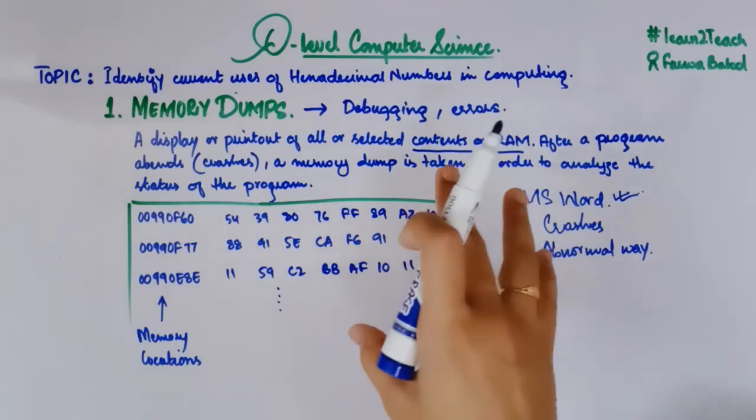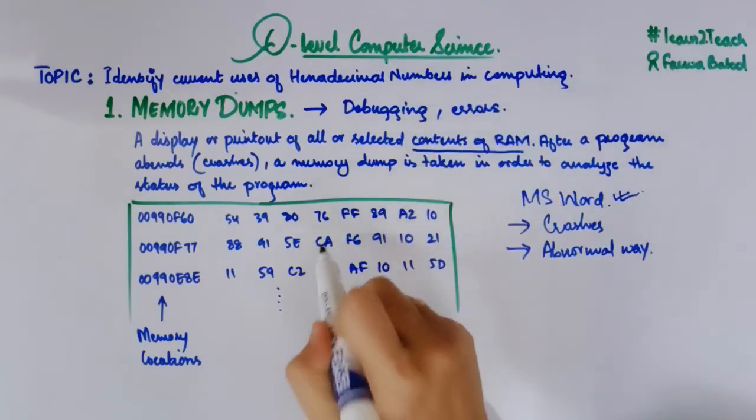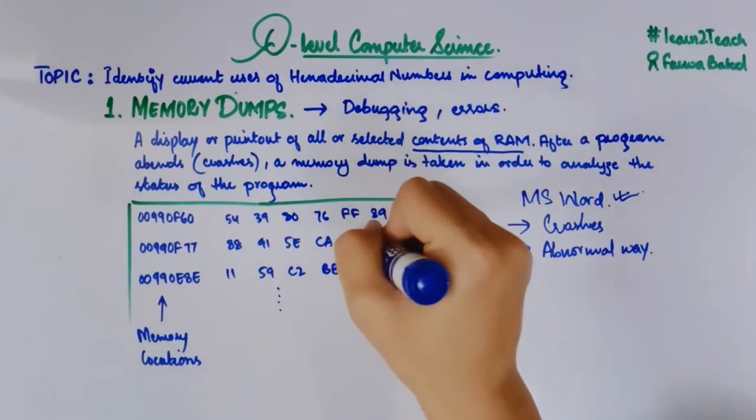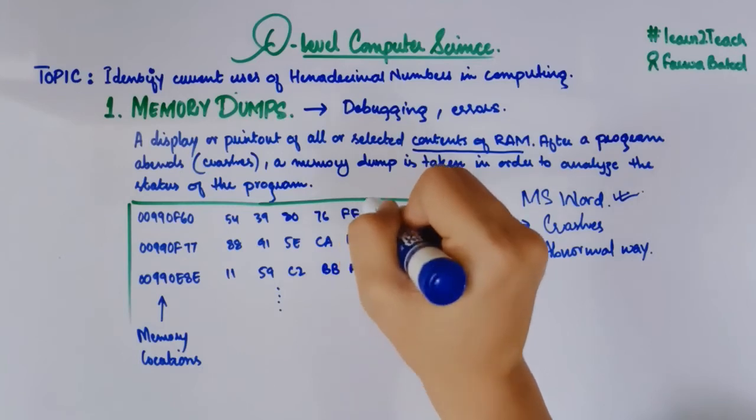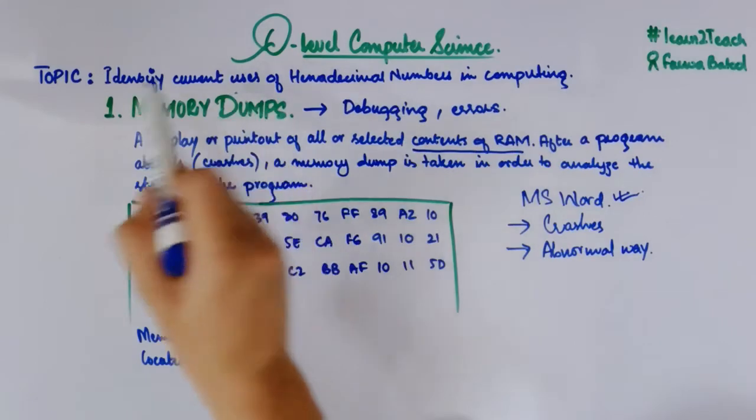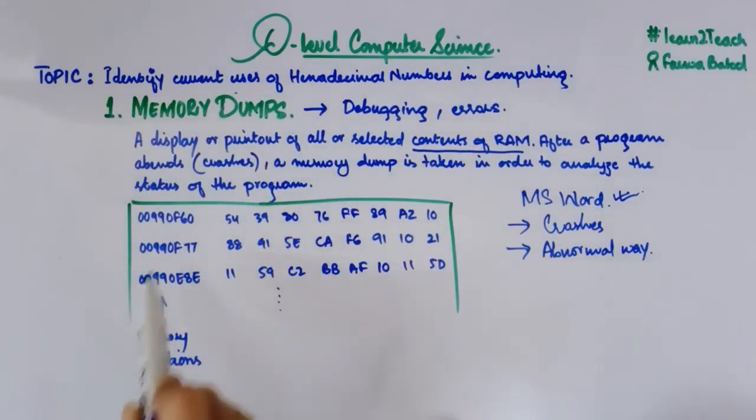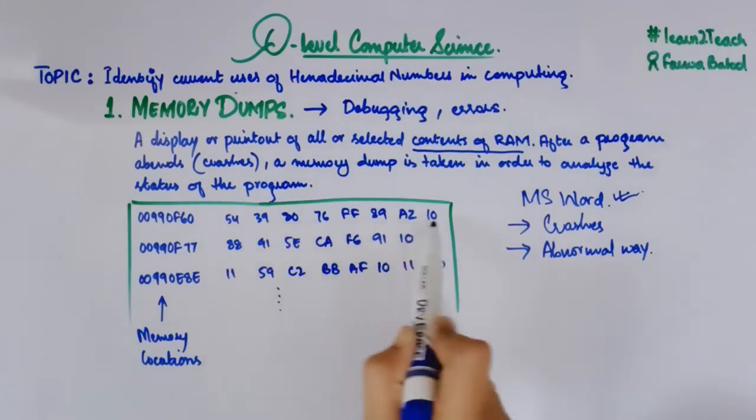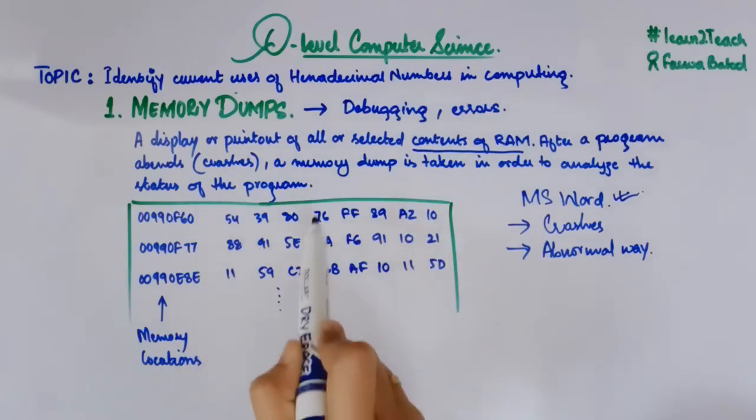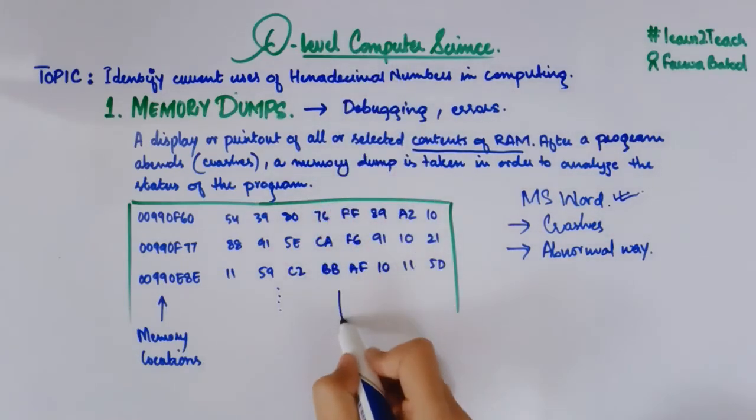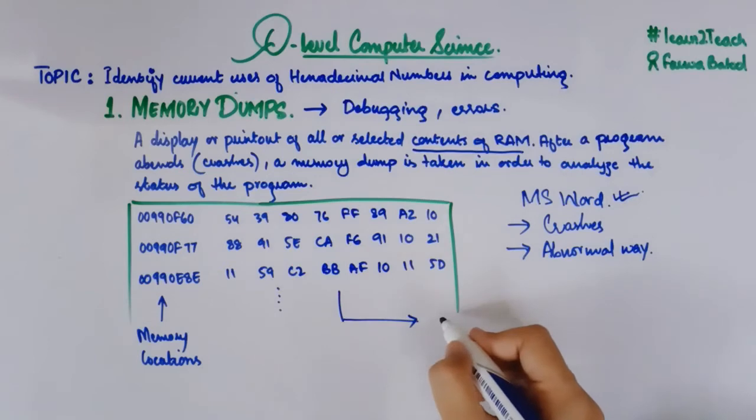The key point here is that the memory dump is in the form of hexadecimal numbers. This is the important thing, this is what I am telling you here in this video. The very first use of hexadecimal numbers is the memory dumps and we have seen that in this example. The memory locations are in the form of hexadecimal numbers as well as the memory content is also in the form of hexadecimal numbers.